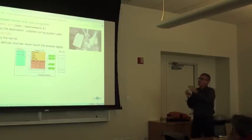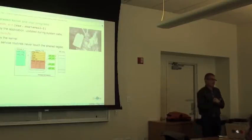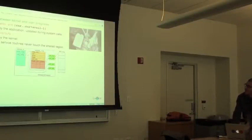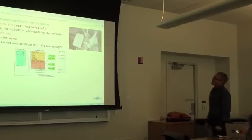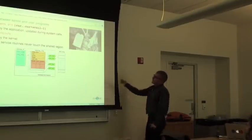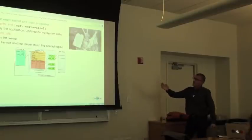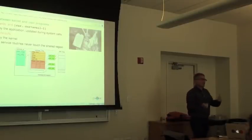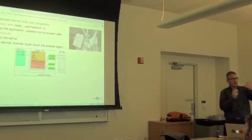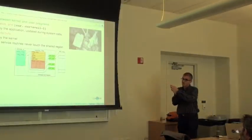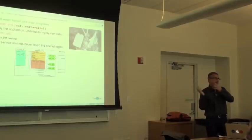The most that can happen if user space corrupts data is that garbled data is sent out — but it's the user space program playing against itself. Interrupt service routines never touch the shared region, so there's no risk of race conditions from interrupts.